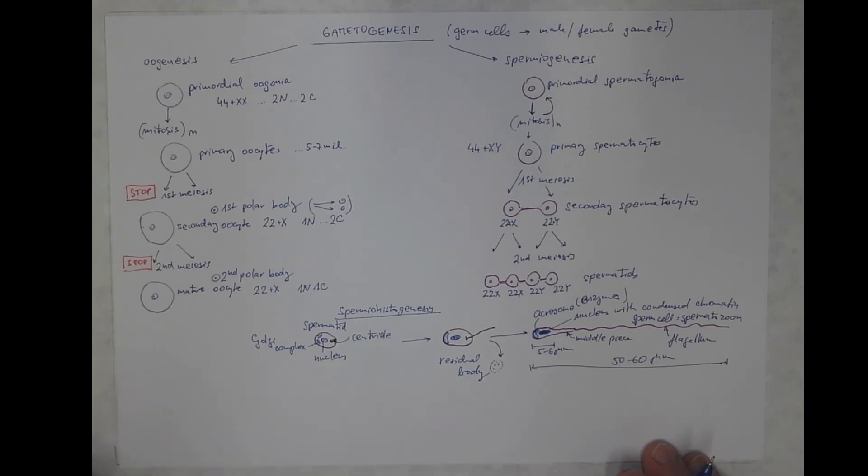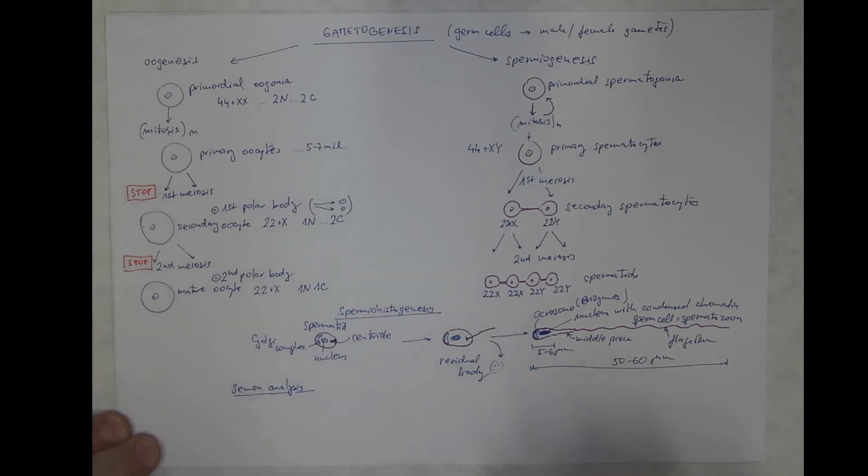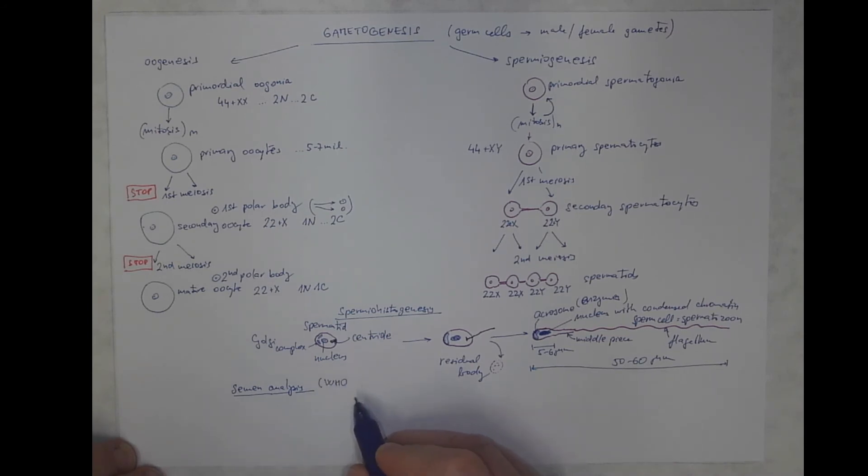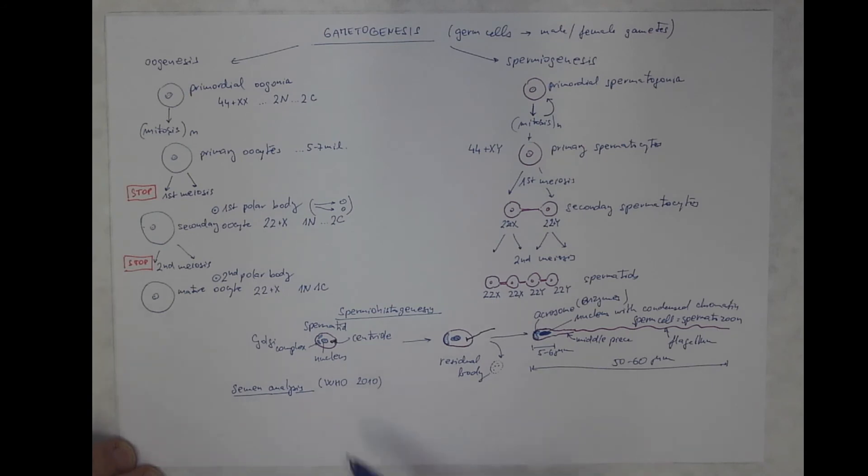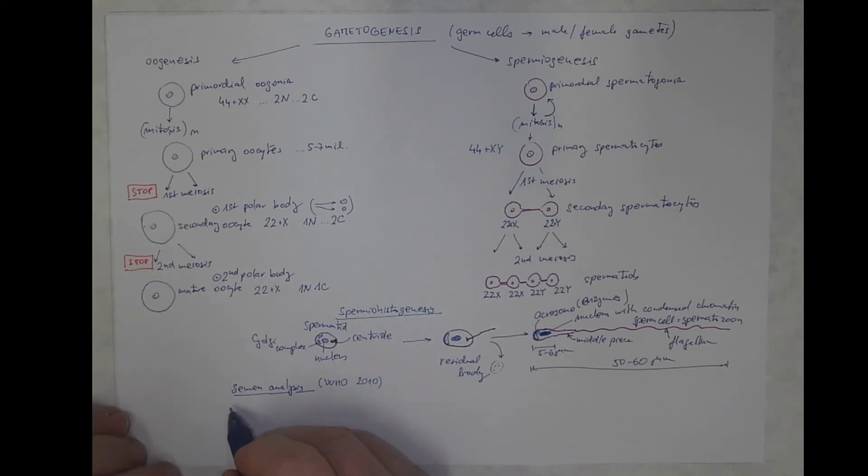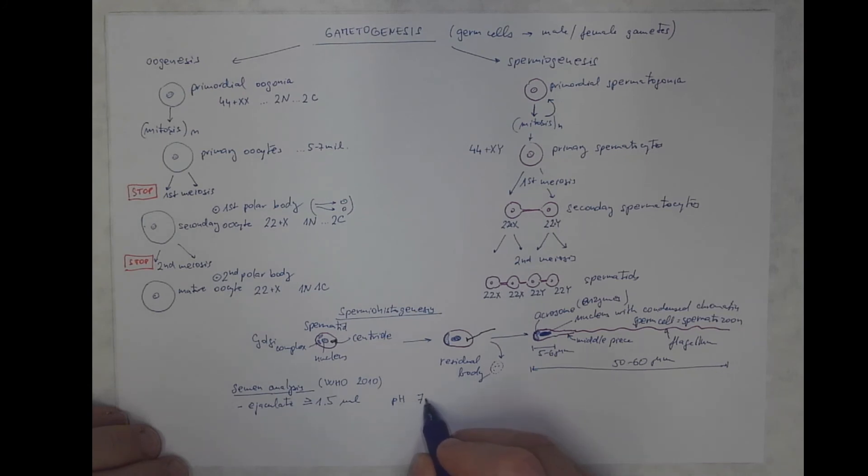The normal semen analysis has its criteria that have been changing over time. The figures I will mention are based on the WHO classification from 2010. In the future, when you will be discussing semen analysis, please check the updates, because these reference values are still evolving. A few figures you should have in mind. It's the volume of the ejaculate, that should be over 1.5 milliliters. The pH should range between 7.2 to 8.0.